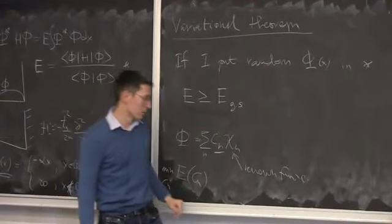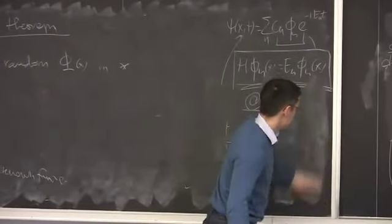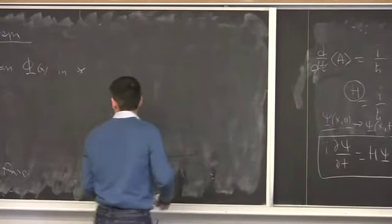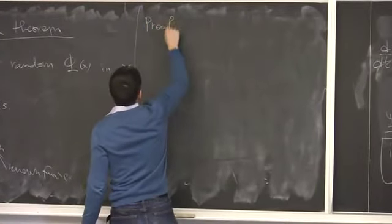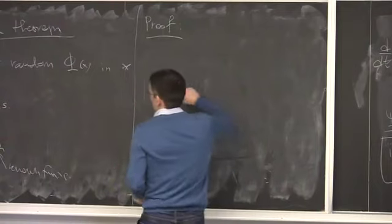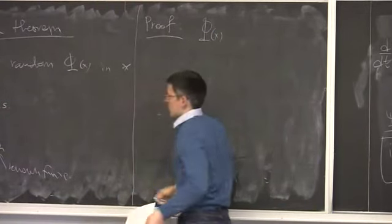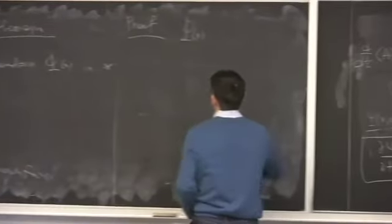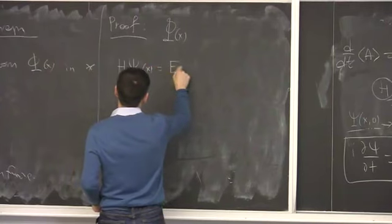Now let's prove the variational theorem. The proof again uses the power of imagination. Whatever random function φ we have, since the Hamiltonian H is a Hermitian observable, it has a complete set of eigenfunctions — the true eigenfunctions {ψₙ} with energies Eₙ, which we don't know but pretend we do. Any arbitrary function φ can be written as a linear combination of those true eigenfunctions: φ = Σₙ cₙ ψₙ.